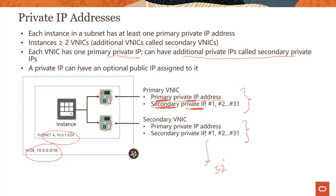Private IP is mandatory — this is how instances are configured within the VCN, how they communicate, and how they can be reached. Each of these private IPs can have an optional public IP assigned to it. In most cases you don't need a public IP, but in some cases you can assign a public IP to a private IP address.